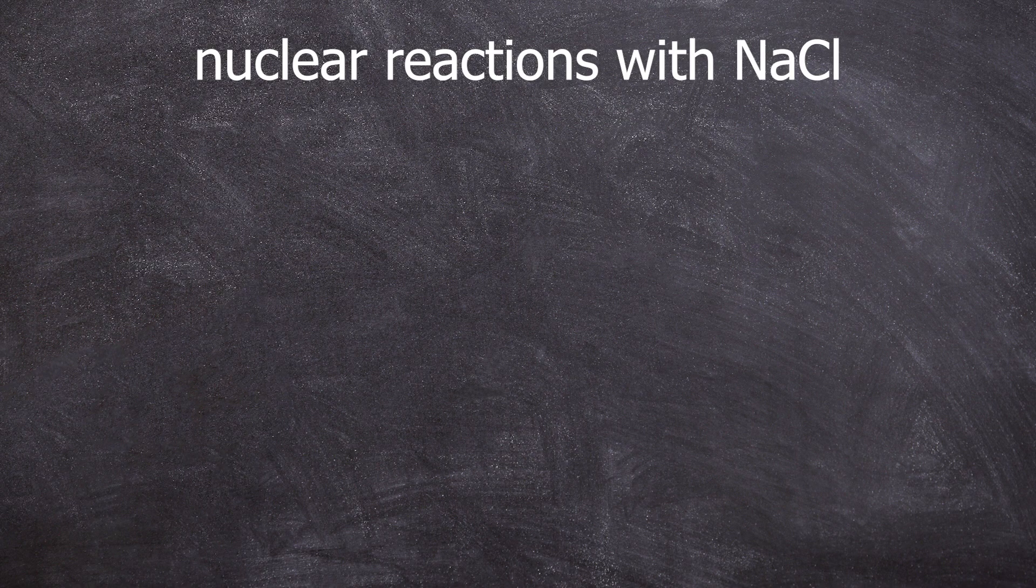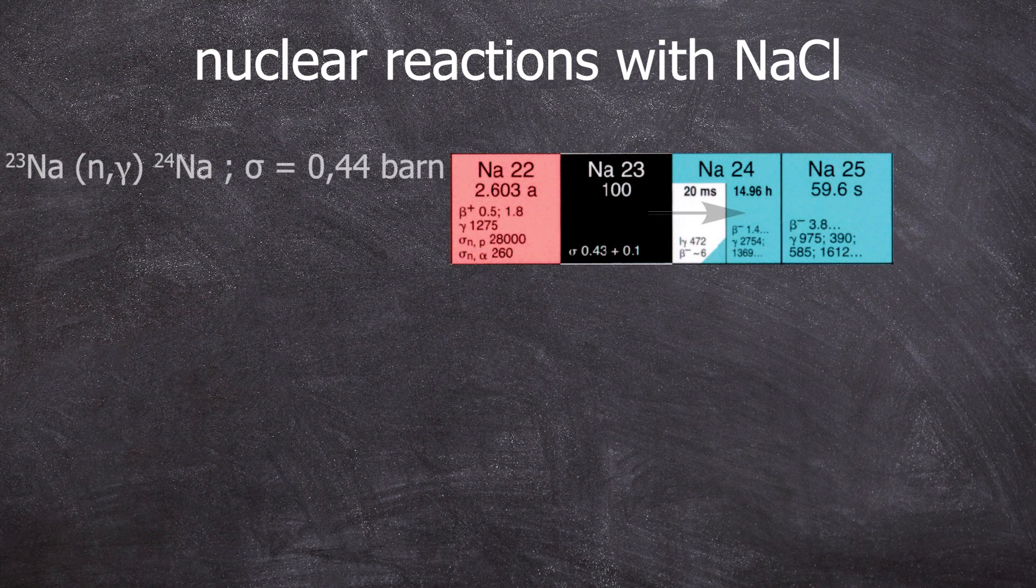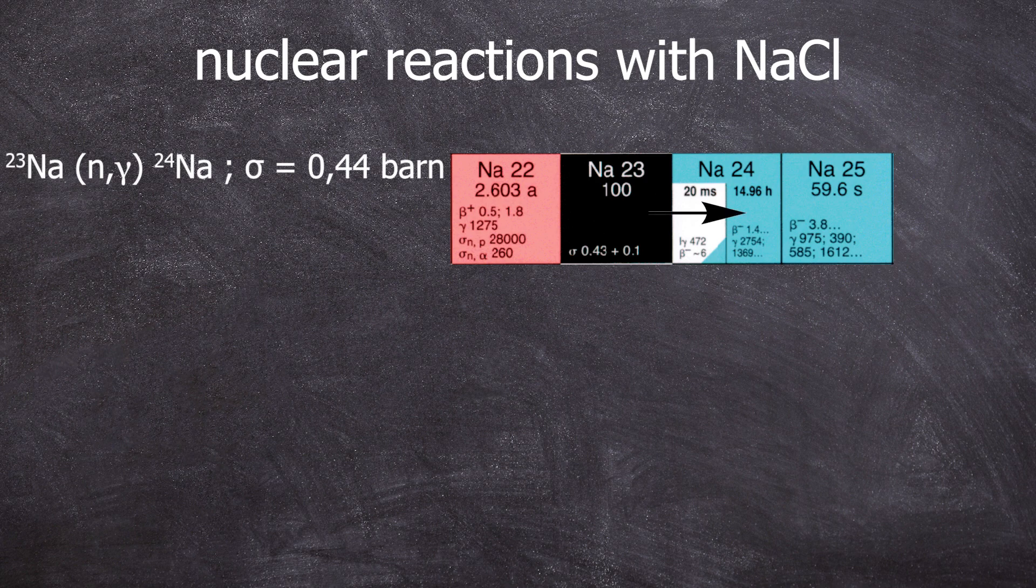What kind of nuclear reactions occur during the irradiation process? Sodium naturally exists only as sodium-23. Through an n-gamma reaction, it transforms into sodium-24.